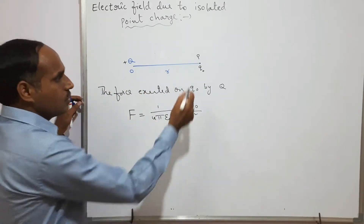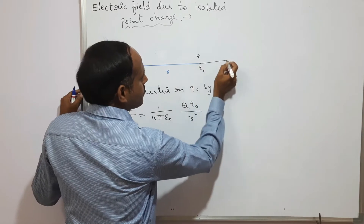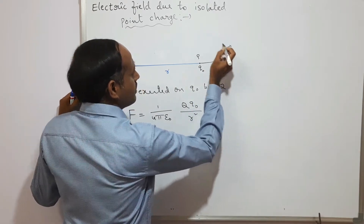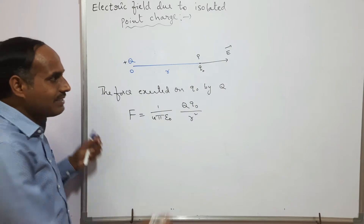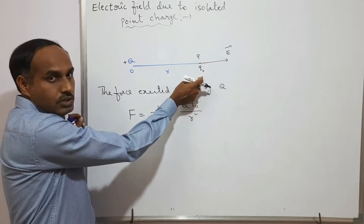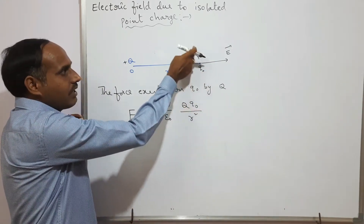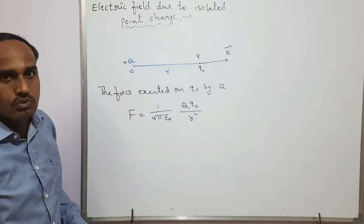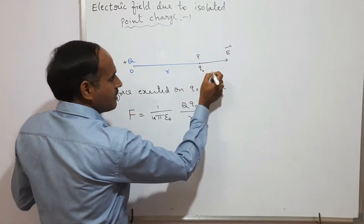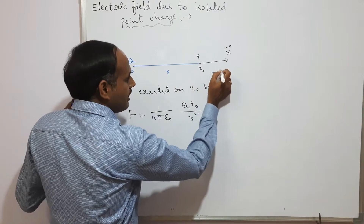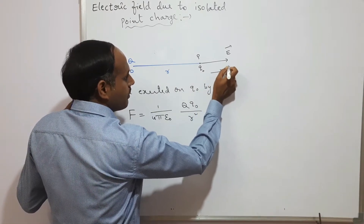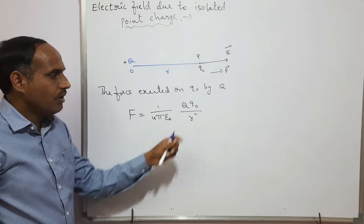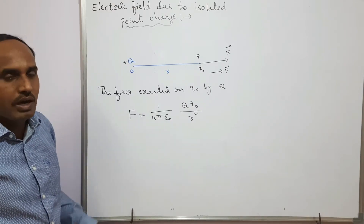So we can give the direction of the electric field due to this charge along the radial direction. Since this test charge is also positive and is placed in the electric field generated by the point charge q, it experiences the force in the direction of the electric field. That force is written as F = (1/4πε) × (q × q₀) / r².